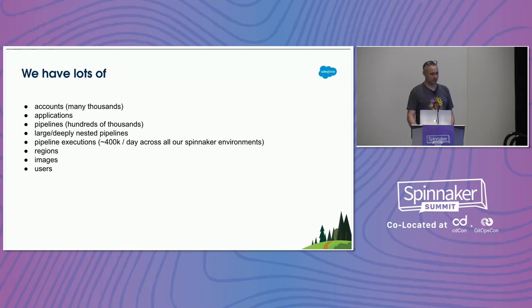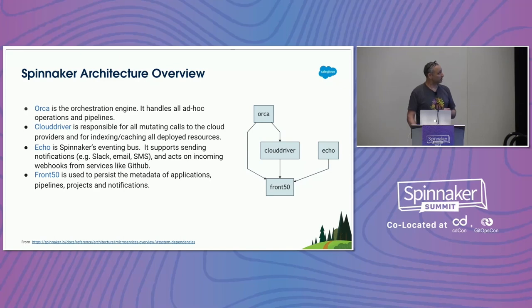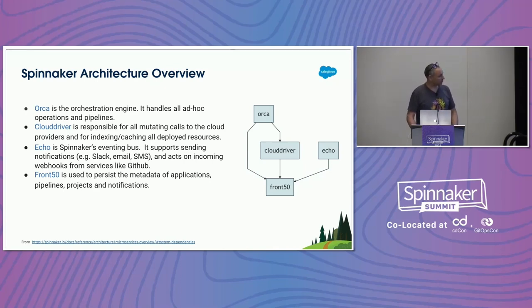We run into limits all the time and we're knocking those limits down — that's what we spend our time doing. I'm going to show a picture of some of the bits of Spinnaker we're going to talk about today: Orca, Clouddriver, Echo, and Front50 — these are the names of Spinnaker microservices. This is a copy from a slide on the Spinnaker website.